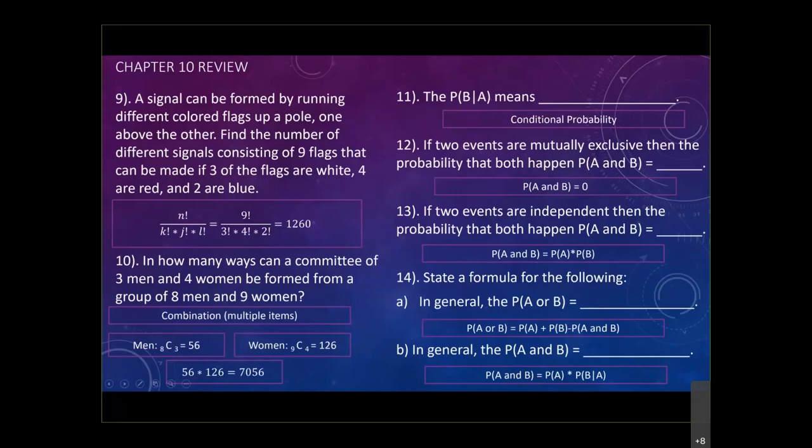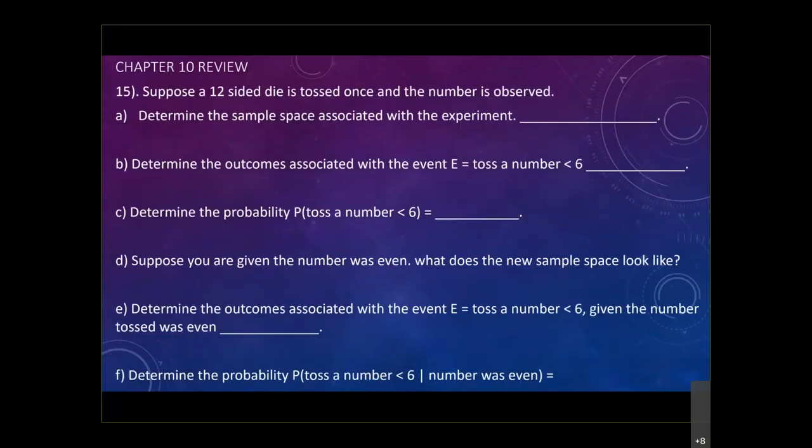Let's take a look at the next item, which is section 10.4. Suppose a 12-sided dice is tossed one time and the number is observed. We need to determine the sample space associated with this experiment.